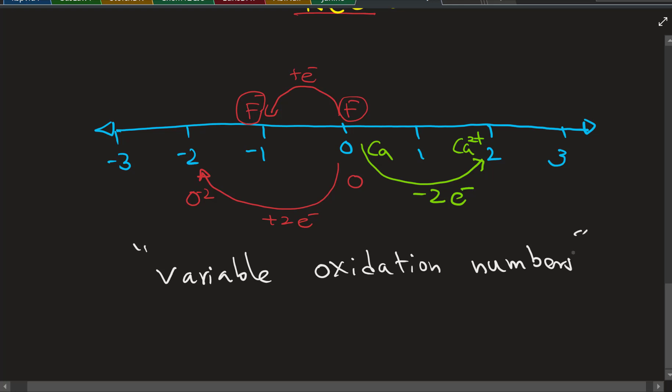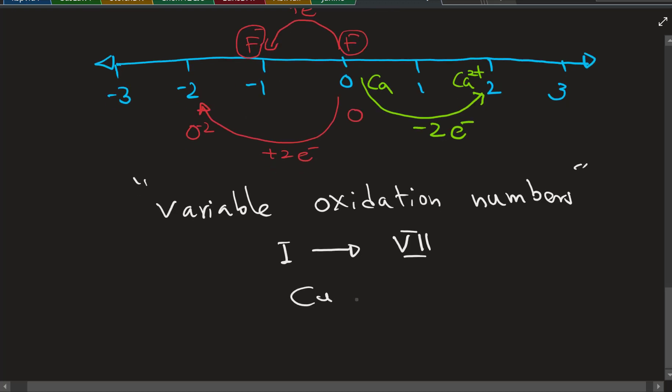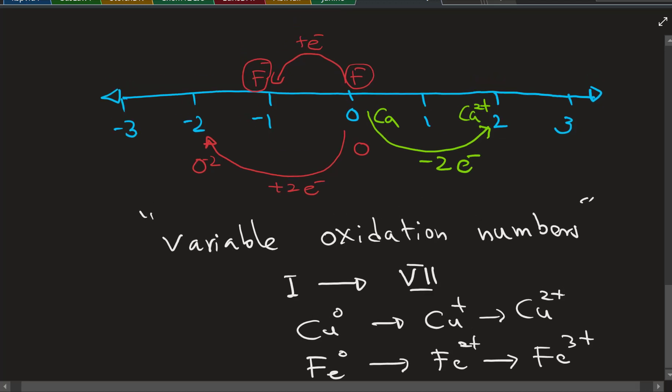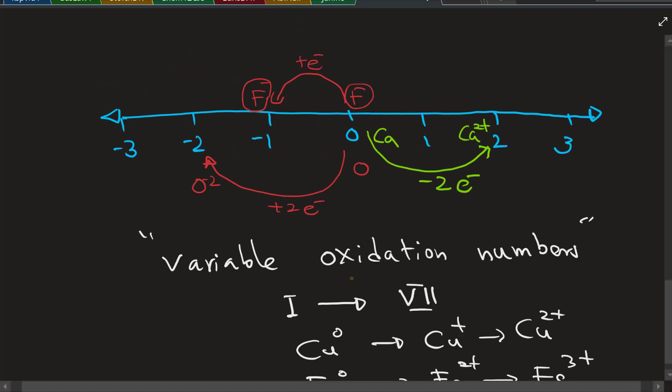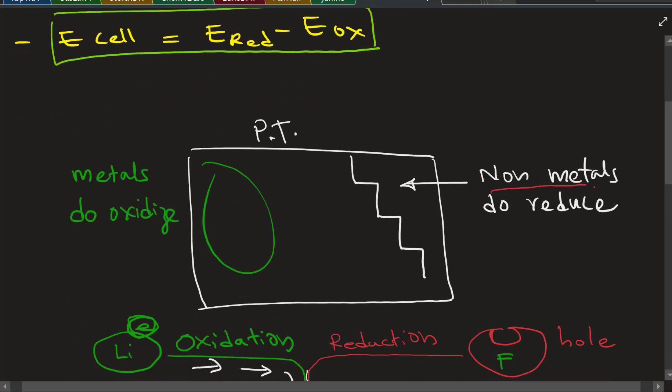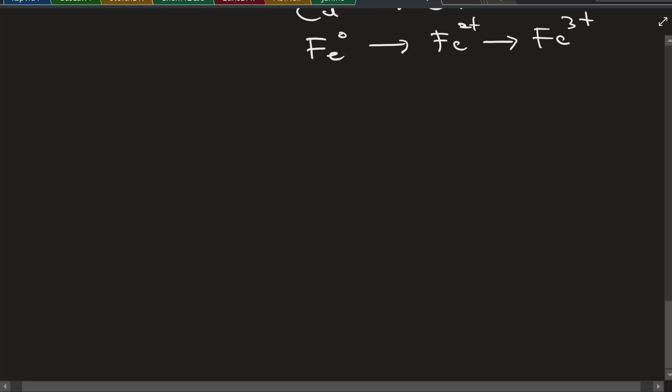Remember variable oxidation numbers that can vary, mostly from Roman one to Roman seven. But the popular ones you'll see: copper zero going to copper plus going to copper 2+, and iron zero going to iron 2+ going to iron 3+. You can check with this oxidation number line to see which direction the electrons are losing or gaining. We can use this later in balancing reactions using the oxidation number method.